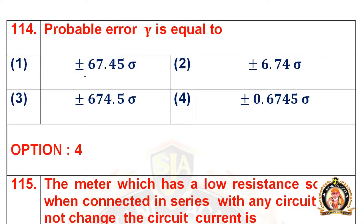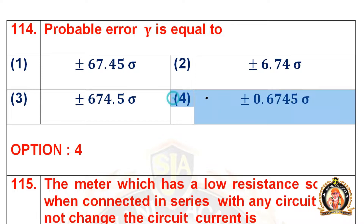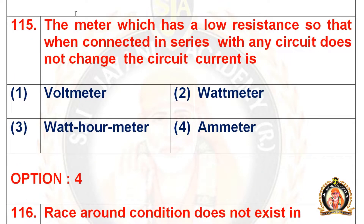Question 114: The probable error γ is equal to. Options include ±67.45σ, ±6.74σ, ±674.5σ, and ±0.6745σ. The right option for question 114 is the fourth one: the probable error γ = ±0.6745 multiplied by the standard deviation σ.